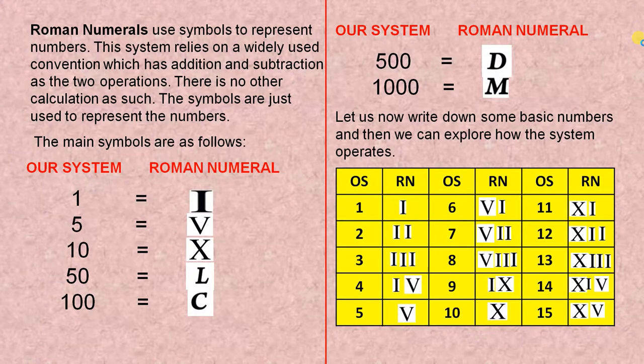The main symbols are as follows. In our system, the one is like the letter I. The five in our system is the V in Roman numerals. Notice they're all capital letters. The ten is the letter X. Fifty is L. One hundred is C, like for century. In our system, five hundred is D in the Roman numeral system, and a thousand is M.